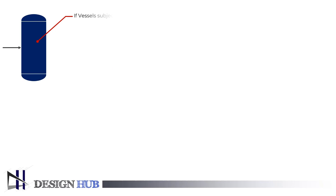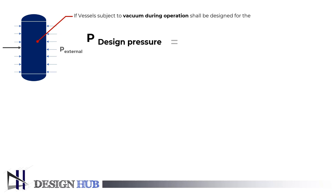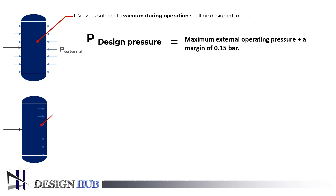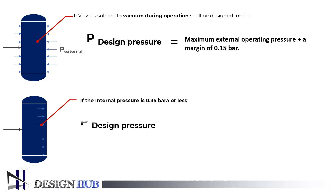Now we will see for vacuum condition: if vessels are subject to vacuum during operation, they shall be designed for the maximum external operating pressure plus a margin of 0.15 bar. If the internal vessel pressure is 0.35 bar or less, then the vessel will be designed for full vacuum condition.